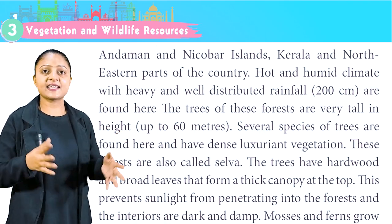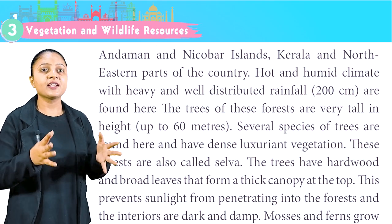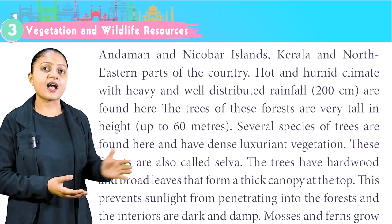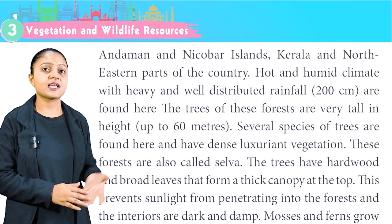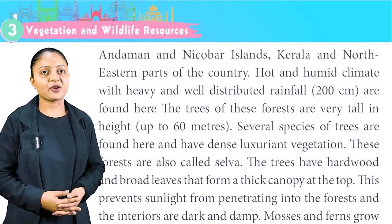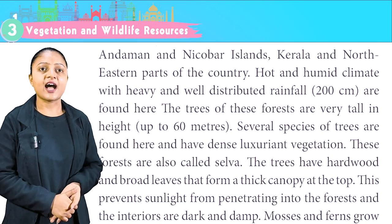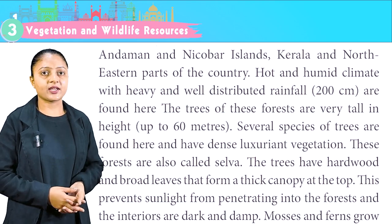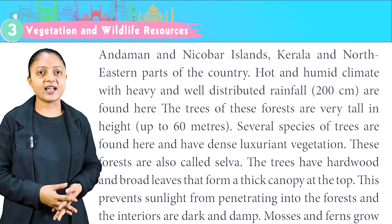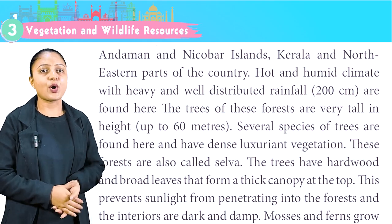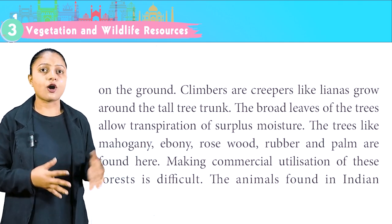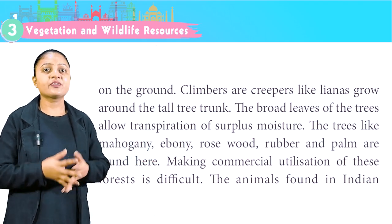Andaman and Nicobar Islands, Kerala and northeastern parts of India have hot and humid climate with heavy and well-distributed rainfall of 200 cm. The trees of these forests are very tall, up to 60 meters. Several species of trees are found here, with dense luxuriant vegetation. These forests are also called Selva. The trees have hardwood and broad leaves that form a thick canopy at the top, preventing sunlight from penetrating — making the interiors dark and damp. Mosses and ferns grow on the ground, and climbers like lianas grow around the tall tree trunks.